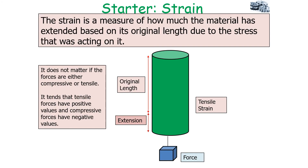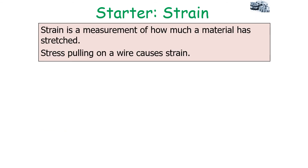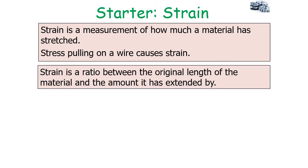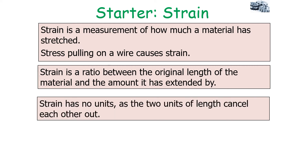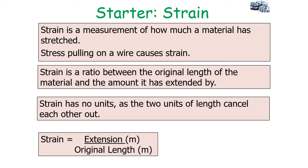Once a material is put under stress, it will show a strain. Strain is a measure of how much the material has extended based on its original length due to the stress acting upon it. Tensile forces have positive values and compressive forces have negative values, but both can cause a strain. Strain has no units, as the extension and original length cancel out. Strain equals extension over original length, and as long as the units of both are consistent, you'll get the correct value.